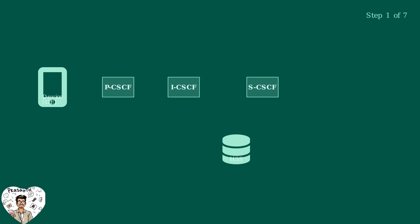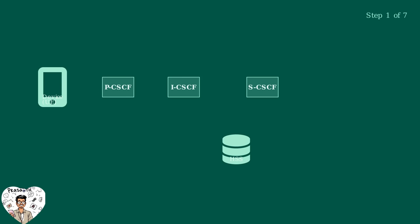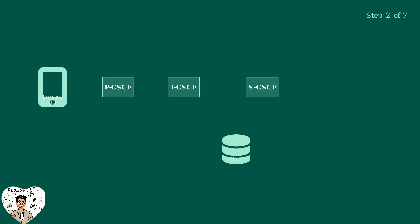Now let's walk through the complete IMS registration flow step by step. This process involves several network entities working together to authenticate and register your device. Step one: your device initiates the registration process by sending a register request to the PCSCF — the first point of contact in the IMS network. Step two: the PCSCF receives the request and forwards it to the ICSCF. The PCSCF discovers the ICSCF through DNS queries in the home network.